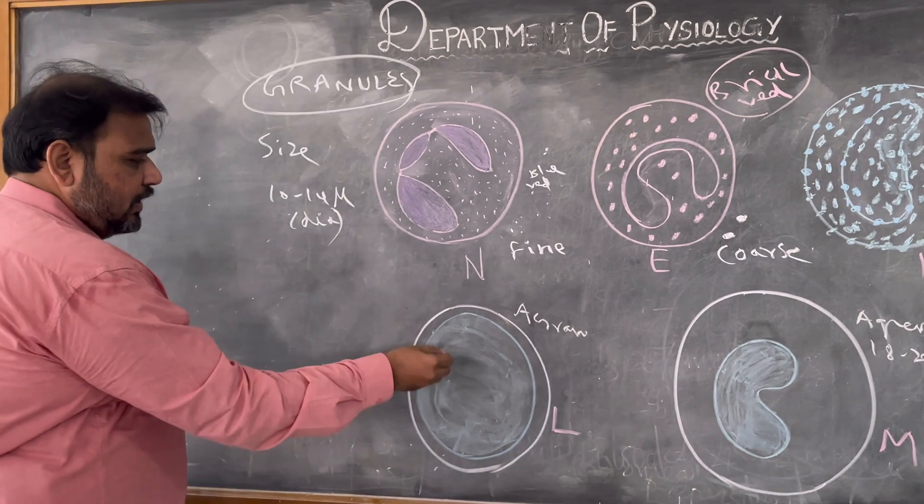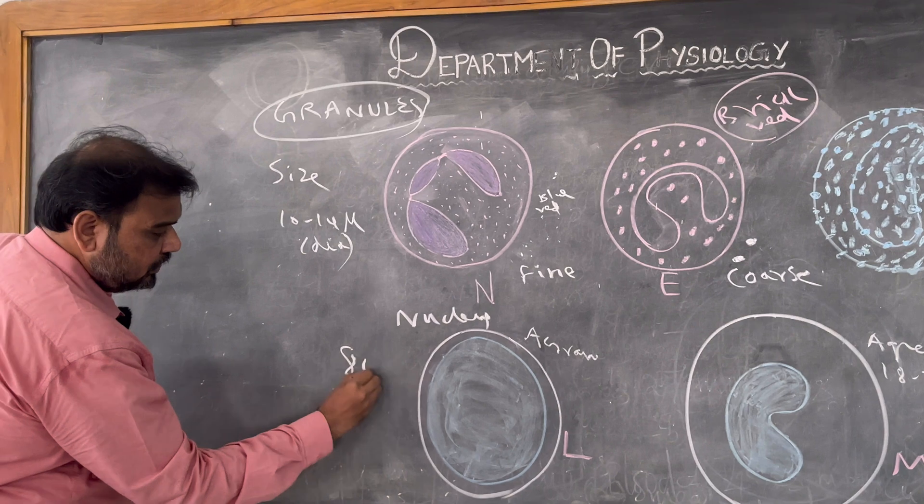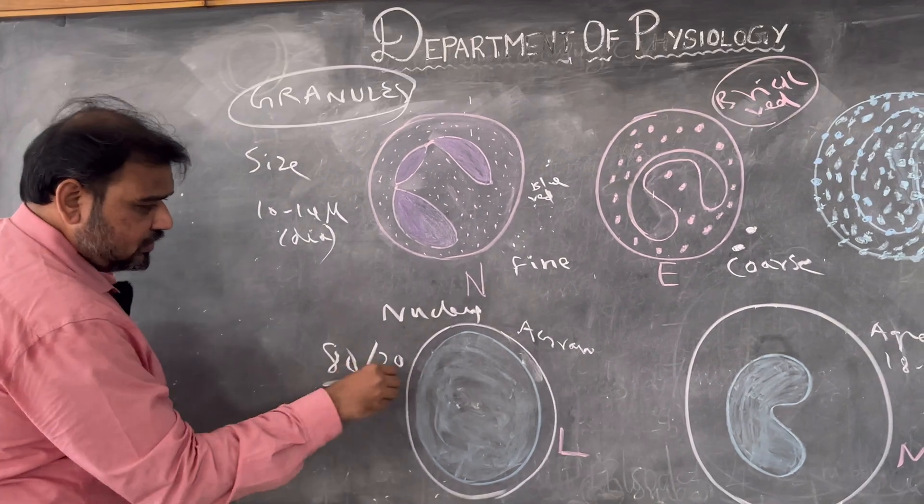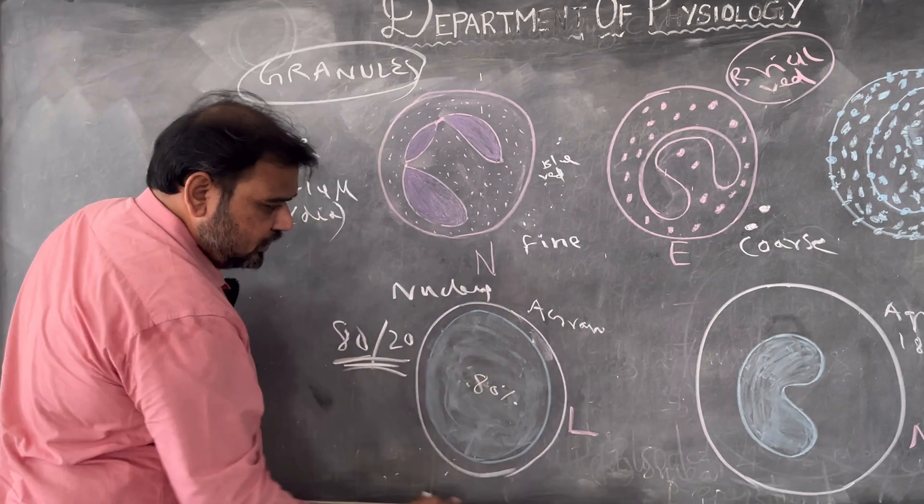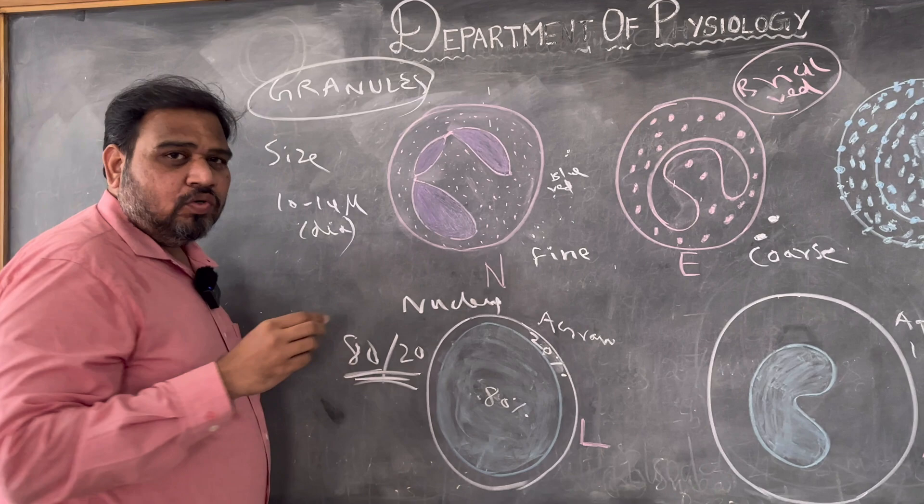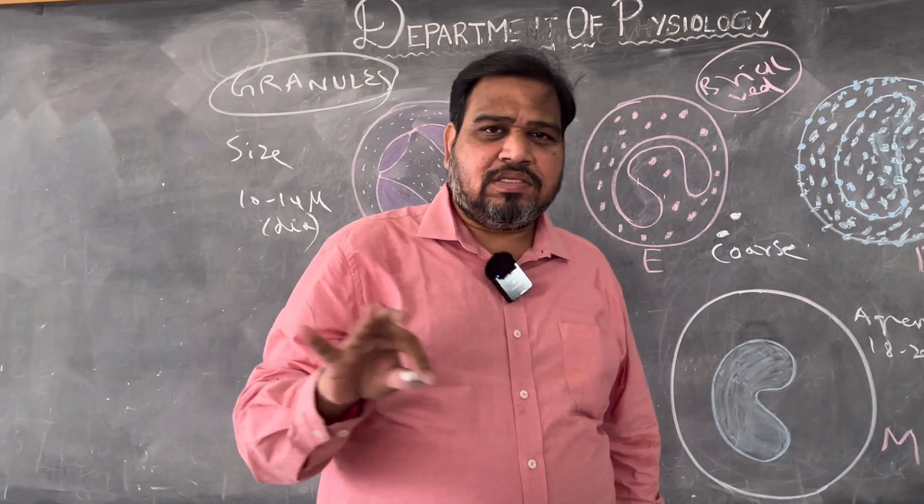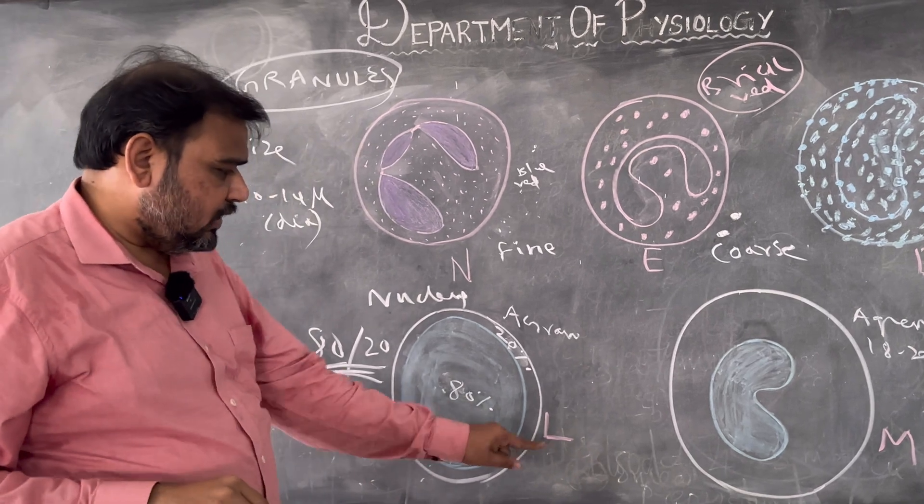Again here it is nucleus. Just concentrate: 80-20 concept. Just concentrate, the nucleus is almost covering 80 percentage of the entire cell, cytoplasm is covering 20 percentage. So if the nucleus is so much big size that it is covering the entire cell, that is covering almost 80 percentage you can see here, then it is lymphocyte.